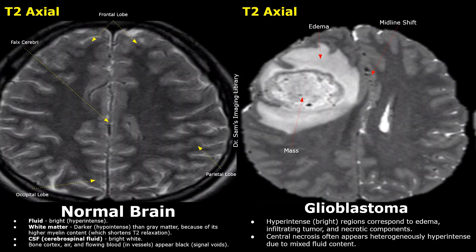Here is another T2 image showing a glioblastoma. The hyper-intense mass can be seen with a slightly heterogeneous and hypo-intense irregular border, and it is surrounded by vasogenic edema, which also appears hyper-intense. Midline shift is noted due to the mass effect.